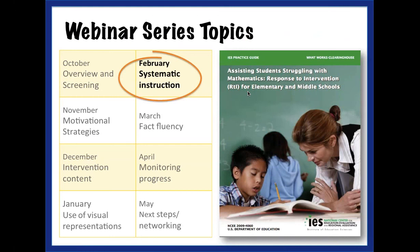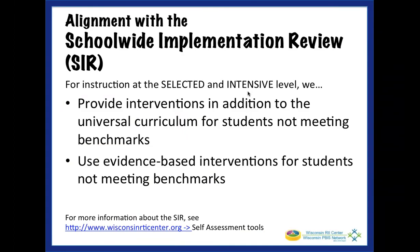Each topic in this webinar series comes from the recommendations in the Institute for Educational Sciences Practice Guide for assisting students struggling with mathematics. In previous webinars, we've discussed the role of screening, motivational strategies, and intervention content. Last month and today's webinars focus on instructional practices. Future topics will include the role of fact fluency and progress monitoring. Today's webinar also aligns with items from the RTI Center Schoolwide Implementation Review, or the CER — a free online self-assessment for schools to gauge their implementation of a culturally responsive multi-level system of support.